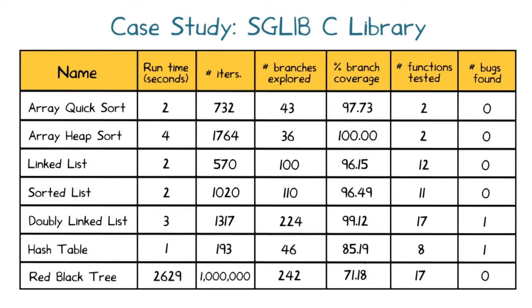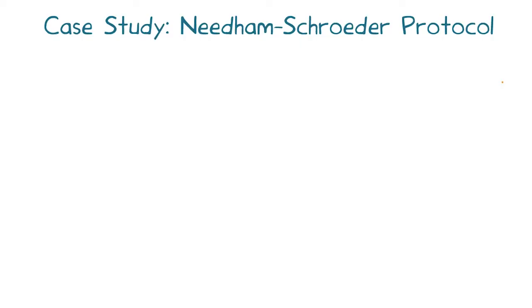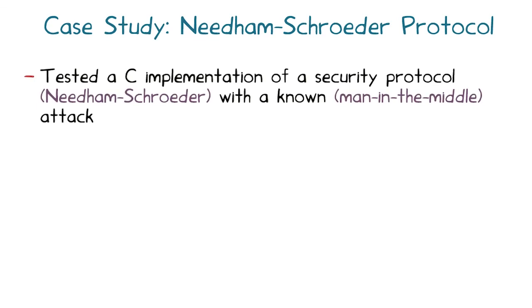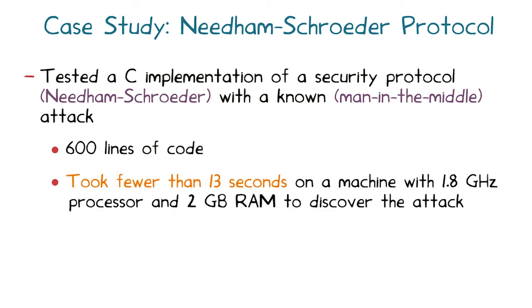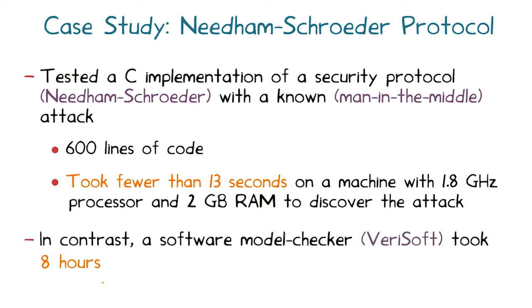This table shows, for each data structure that sglib implements: the time DSE took to test it in seconds, number of iterations, number of branches executed, branch coverage obtained, number of functions executed, and number of bugs found. Notice that branch coverage in most cases is very high, approaching 100%. The authors investigated the few uncovered branches and found most were in fact unreachable. In another case study, DSE was applied to test a C implementation of the Needham-Schroeder public key protocol, a protocol known to be vulnerable to a man-in-the-middle attack.